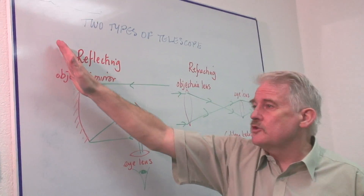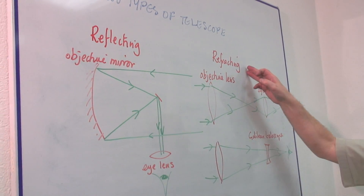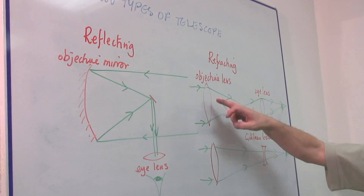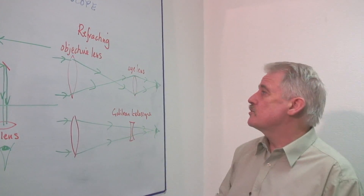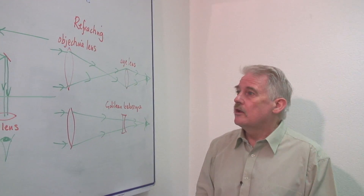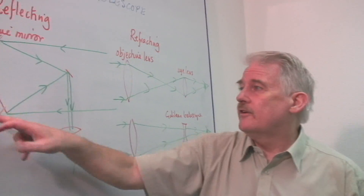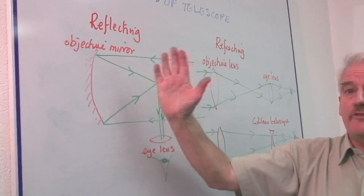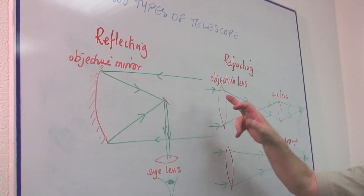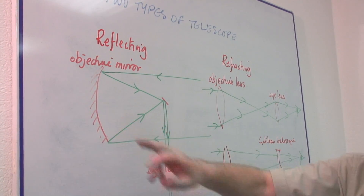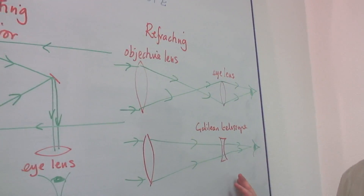Reflecting telescopes use mirrors as the objective. A refracting telescope uses an objective lens. They both do the same job — the objective creates the first image from the distant object, whether it's an objective lens or an objective mirror. Then the eye lens magnifies that image.